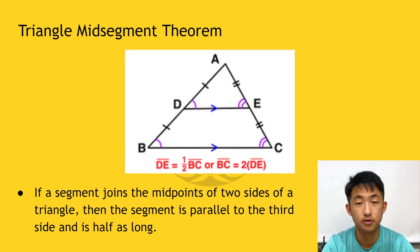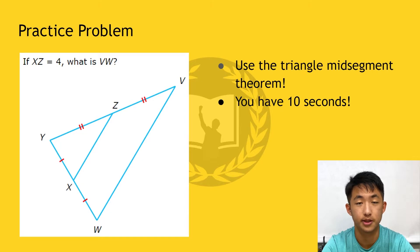All right, let's take a look at your practice problem on the triangle midsegment theorem. Given that segment XC has a length of four, what is the length of segment VW? Remember to use the triangle midsegment theorem to your advantage. You have 10 seconds. Time starts now. Good luck.